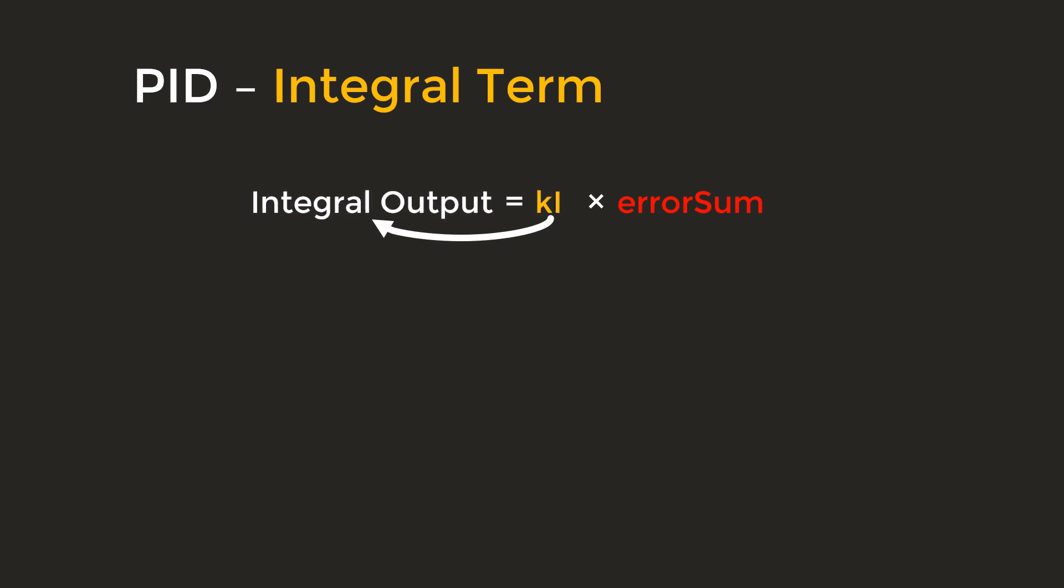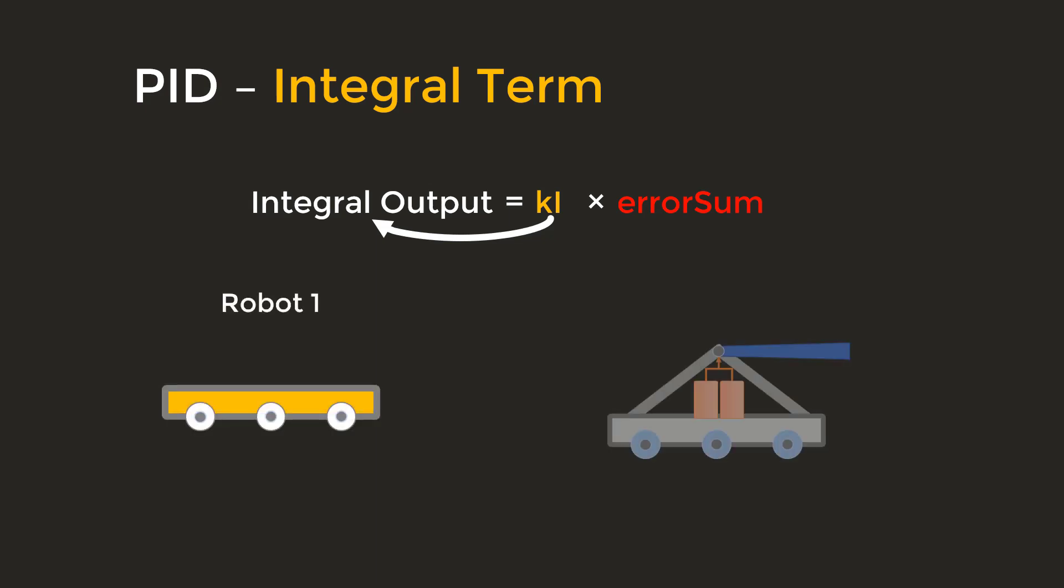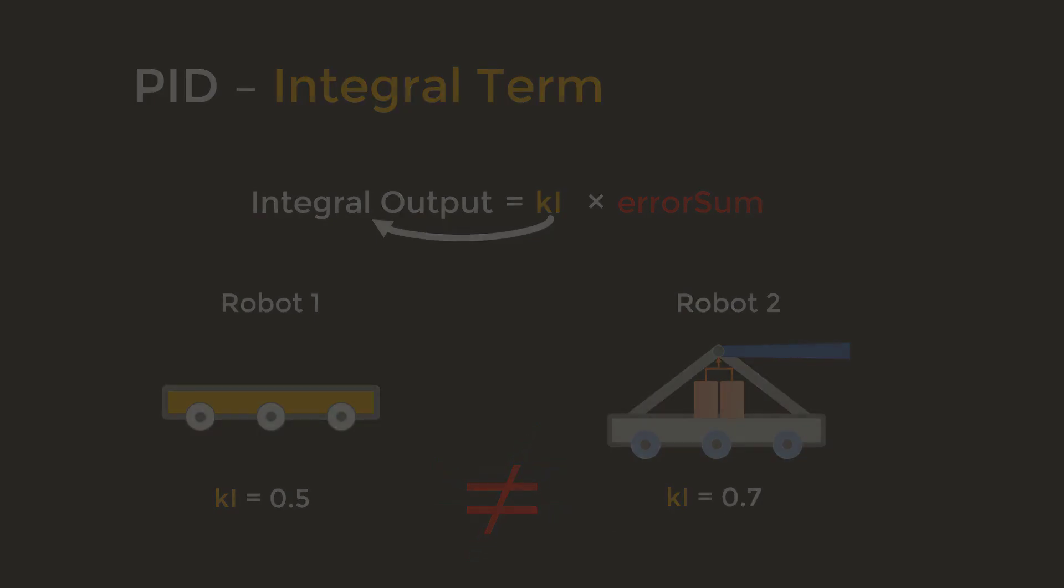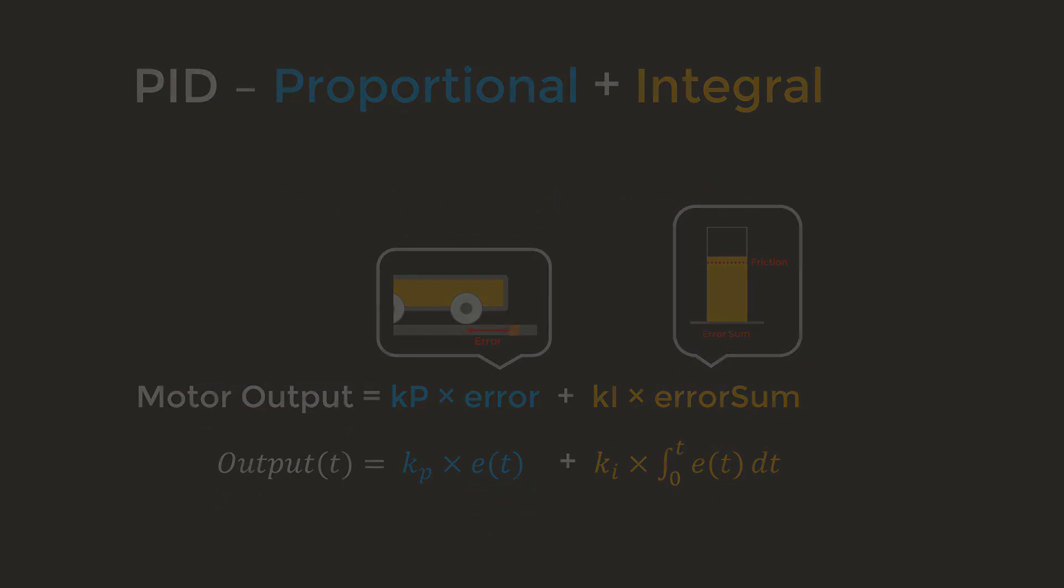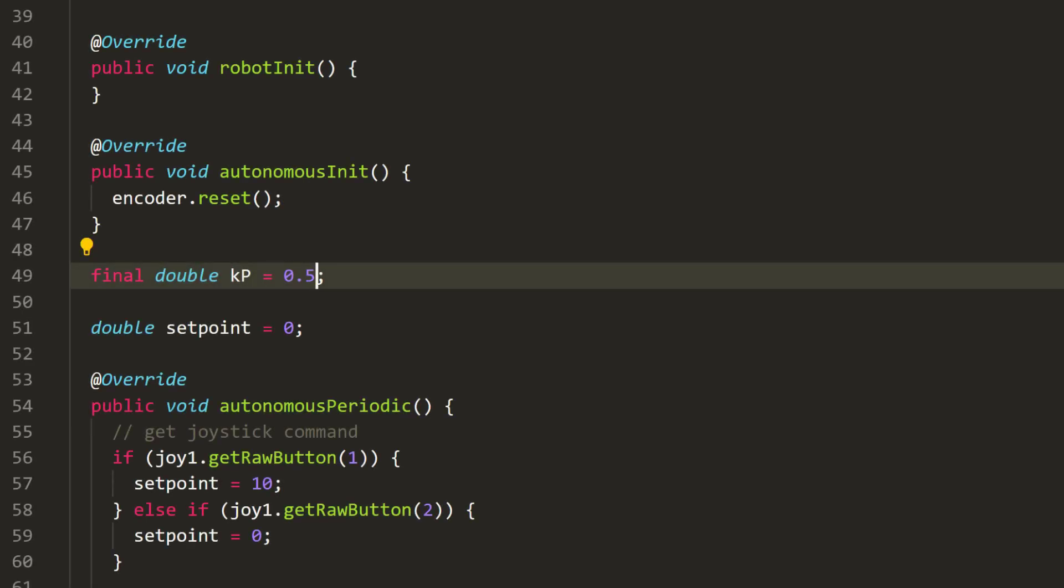But if the constant is too big, the robot may oscillate. Similar to KP, KI is different for every robot as well, and we have to tweak it until the robot performs a motion we like. To find the sum of all errors, we will integrate the error function. And to make the proportional term and the integral term work together, we will add them in the formula. Now let's implement the integral term in the code.